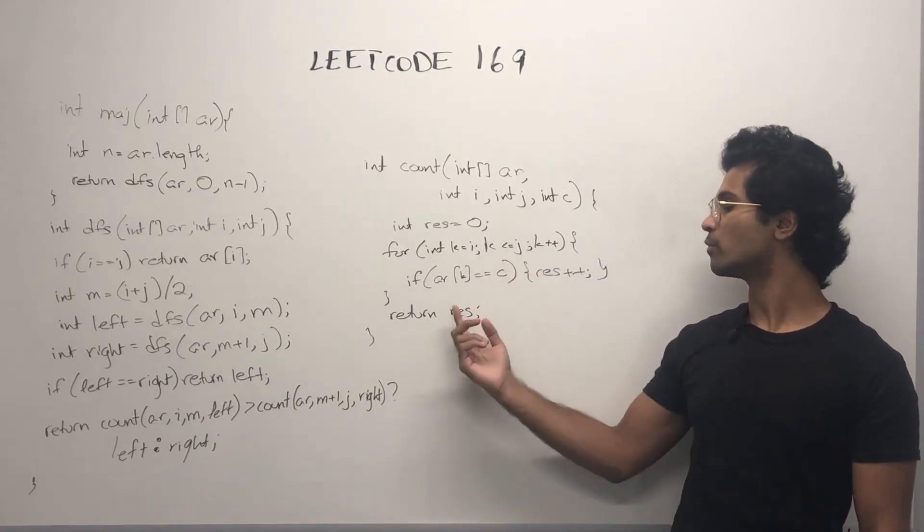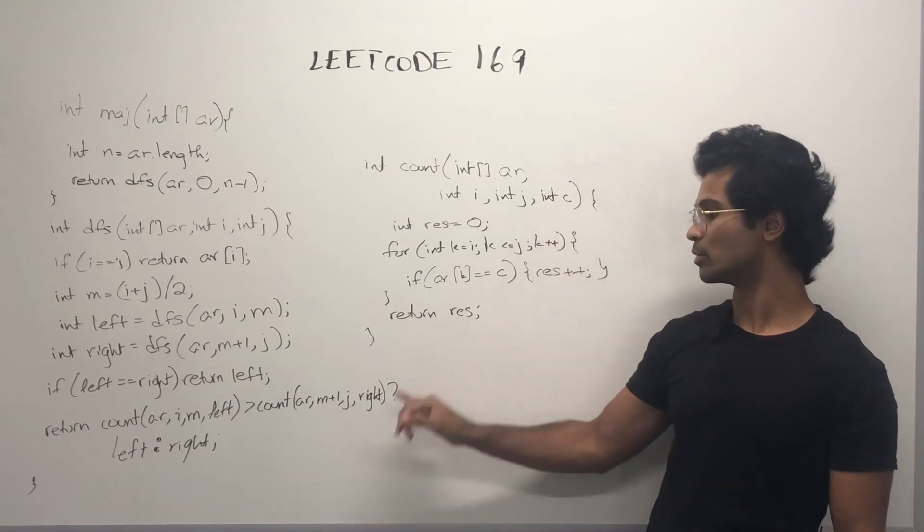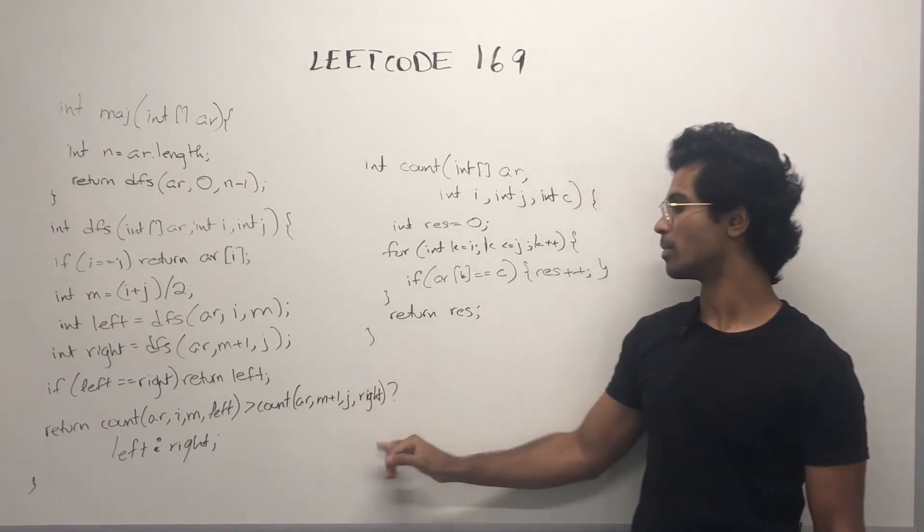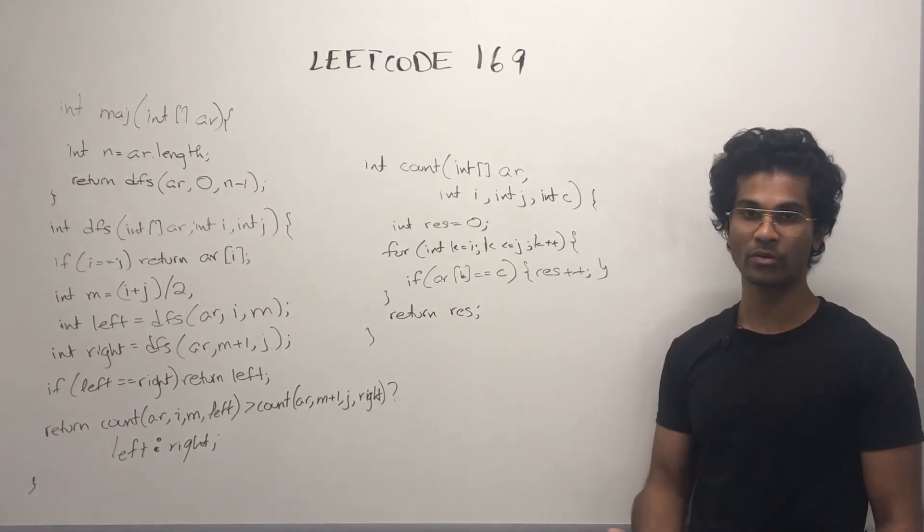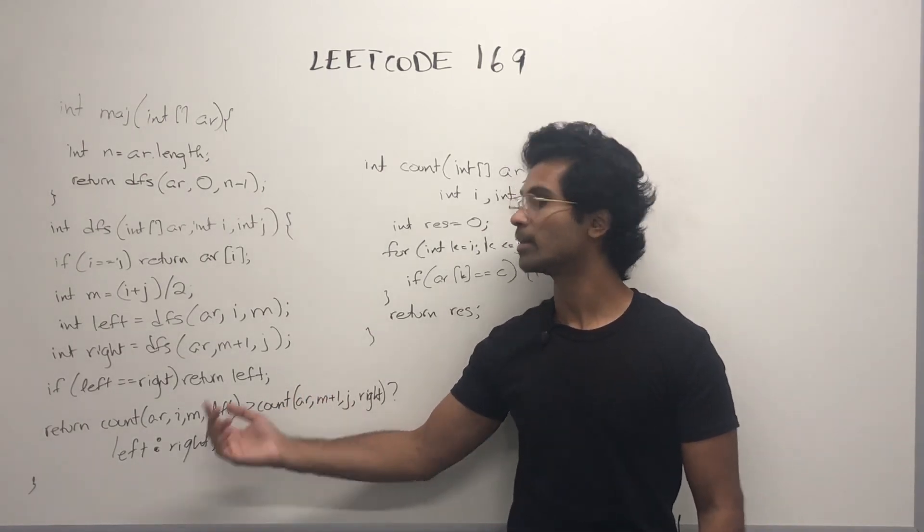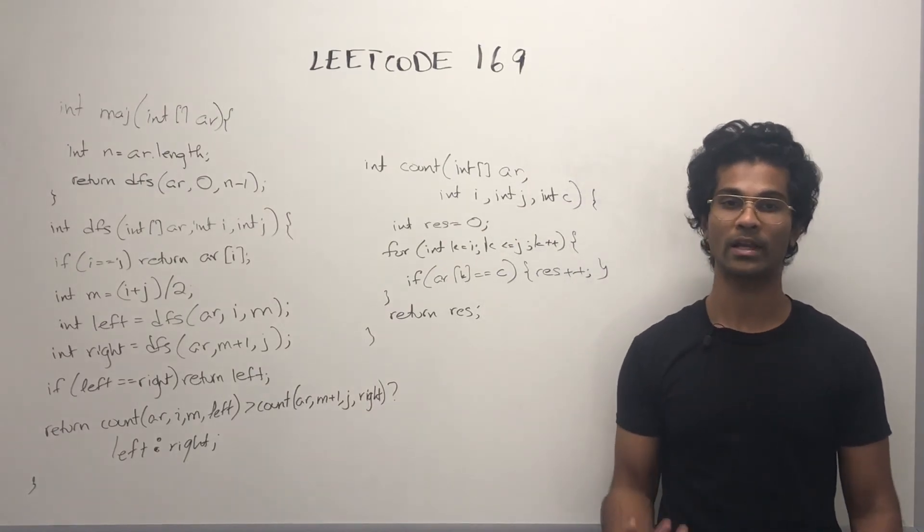We simply create a for loop, loop through, and try finding the C, which is whatever specific integer we passed in, and we return the total count. Whichever one has the higher count is going to be the ultimate answer, and we return to find our majority element.